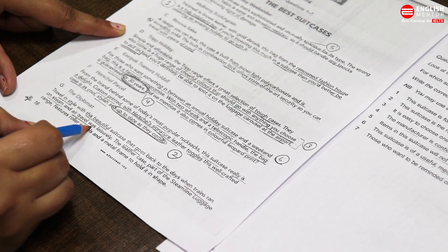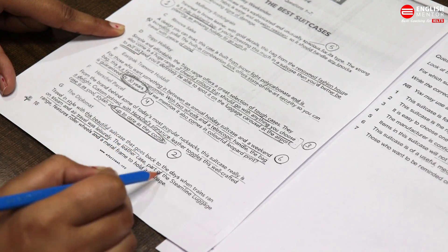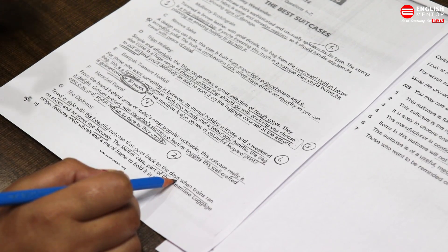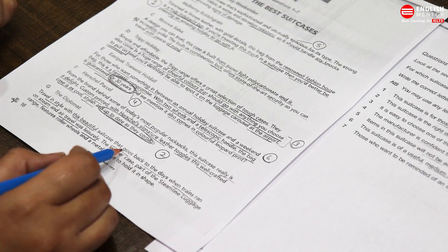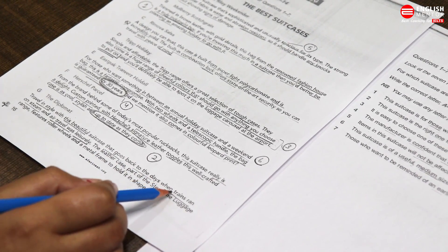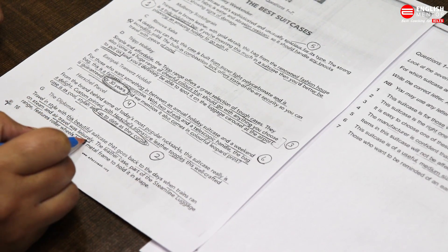The Diplomat. Travel in style with this beautiful suitcase that goes back to the days when trains ran on steam and air travel was leisurely. They're talking about the past: goes back to the days. For students who need to relate this to earlier age of travel, you can take this hint: goes back to the days when trains ran on steam and air travel was a leisure traveling activity.